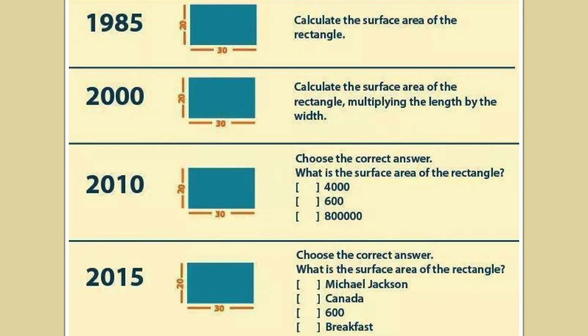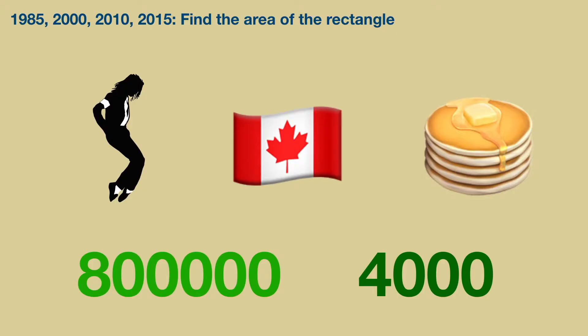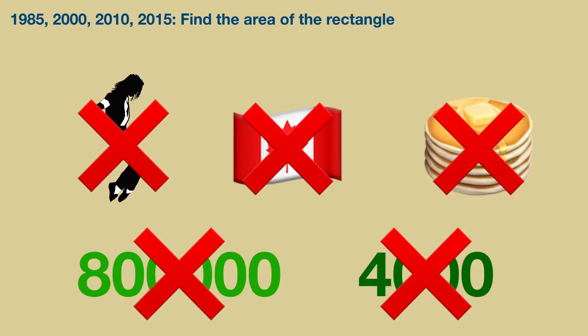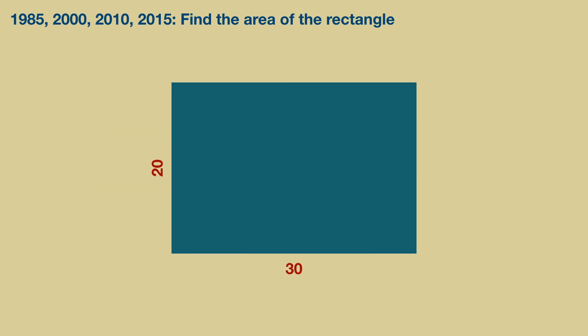Now for 1985 to 2015, we simply just find the area of the rectangle. No, the answer is not Michael Jackson, Canada, breakfast, 800,000 or 4,000. From the previous problem, we see that the area of the rectangle is just length times width. So the answer is therefore 30 times 20, which is 600.